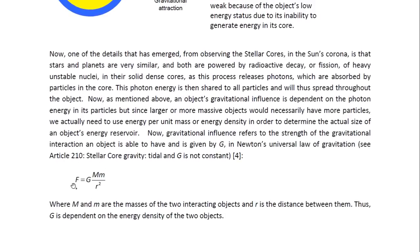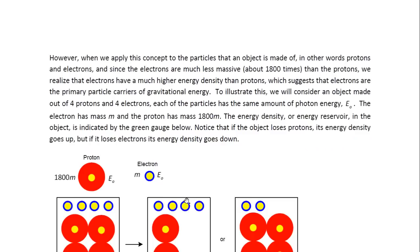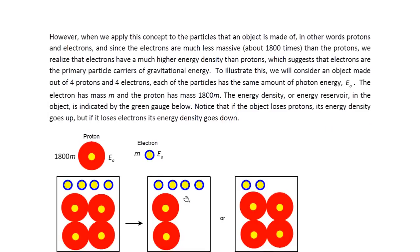And Newton's law is given by this equation where here is the G. The G is usually called the gravitational constant. But as I mentioned before, it's not actually a constant because it's dependent on the photon energy within the particles or the objects interacting. And the two objects that are interacting would have mass capital M and lowercase m. And R is the distance between them. So, this means that G is dependent on the energy density of the two objects. However, when we apply this concept to the particles that an object is made of, in other words, protons and electrons,